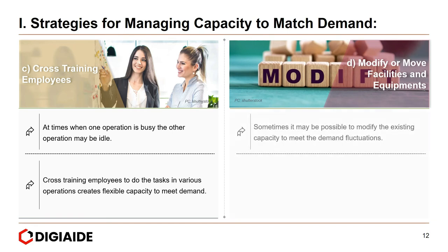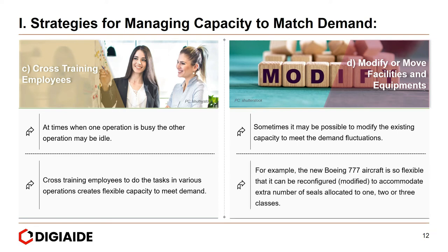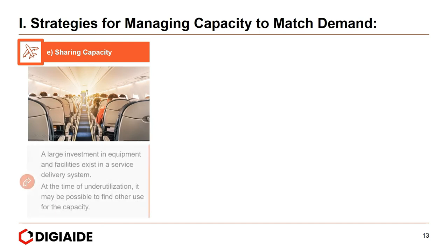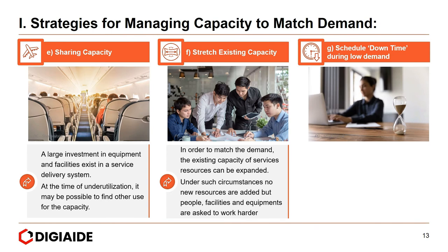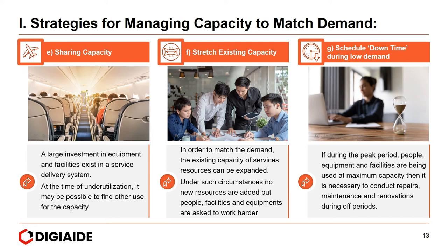Fourth, modify or move facilities and equipment: sometimes it is possible to modify existing capacity to meet demand fluctuations. For example, the Boeing 777 aircraft is so flexible it can be reconfigured to accommodate different numbers of seats across one, two, or three classes — quickly modified to match demand from different market segments, as seen in the case of Vistara. Fifth, sharing capacity: at times of underutilization, it may be possible to find other uses for the capacity. Sixth, stretching existing capacity: no new resources are added, but people, facilities, and equipment are asked to work harder — common at nightclubs and lounges on weekends. Finally, schedule downtime and maintenance during low demand: if people, equipment, and facilities are used at maximum capacity during peak periods, repairs, maintenance, and renovations should be conducted during off-peak periods.